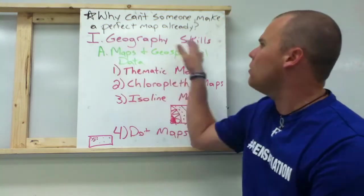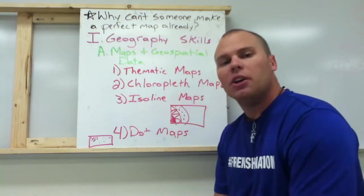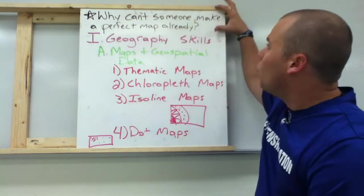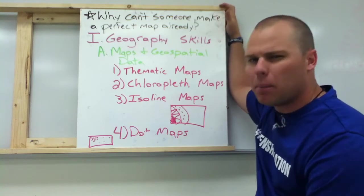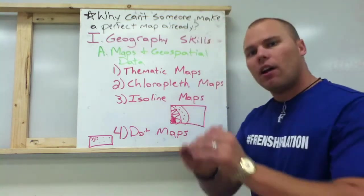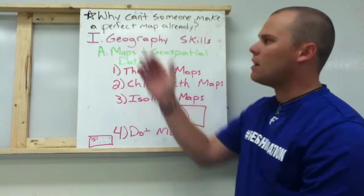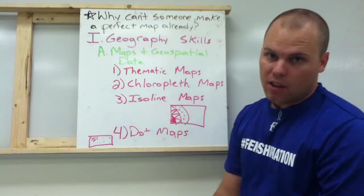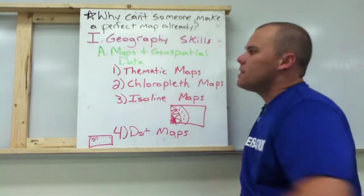Today we're going to be looking at your first topic — there's actually going to be two. Your first topic is looking at geography skills. There is just one essential question for today: why can't someone make a perfect map already? You may think you know the answer to that, but everything we talk about is going to come down to that answer. There's going to be an elaborate answer, not just a simple one. So again, we're going to start with geography skills.